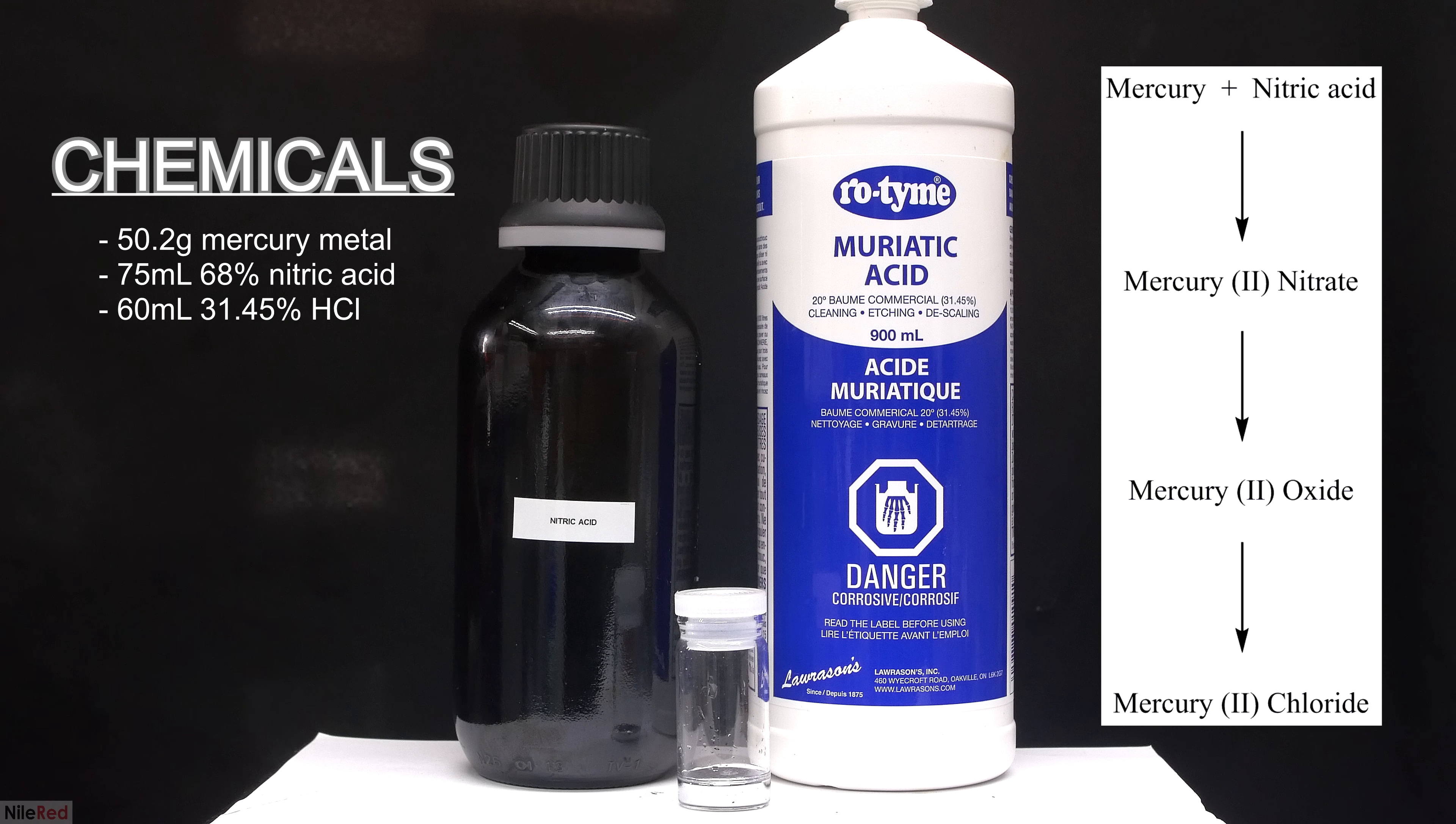Using heat, we decompose the mercury(II) nitrate into mercury(II) oxide, which we then react with the hydrochloric acid to get our final mercuric chloride. I got the procedure for this preparation from the Science Madness forums, and I'll provide a link to it in the description.